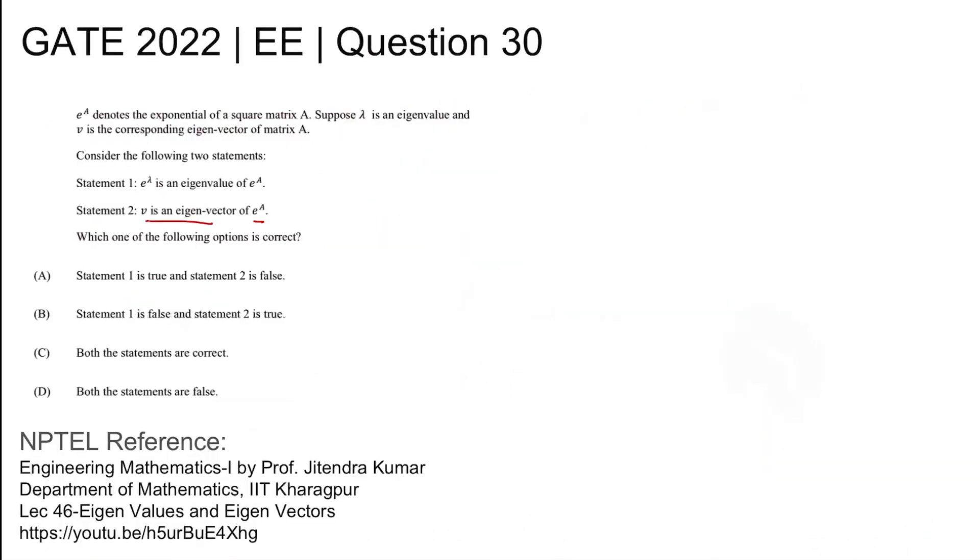So V is the eigenvector of E to the power A and E to the power lambda is its eigenvalue of E to the power A. So both the options are true. Option C is the correct answer. Thank you.